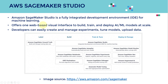So what is Amazon SageMaker Studio? SageMaker Studio is a fully integrated development environment, or IDE for short, for machine learning. I really like Amazon SageMaker Studio because it provides just one place, like a one-stop shop for everything you want to do within a machine learning workflow.